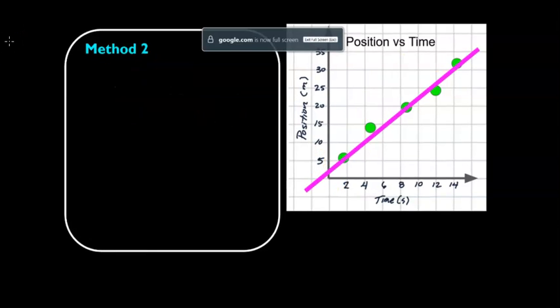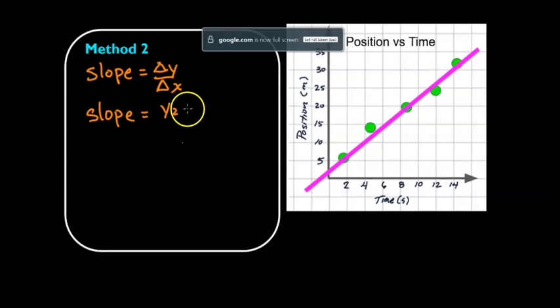Now let's take a look at method number two. So method number two, we're going to use this equation that the slope is equal to, and there's a couple ways to write this. It could equal to the delta y over the delta x, the change in y over the change in x. This just means the same thing as y2 minus y1 divided by x2 minus x1.